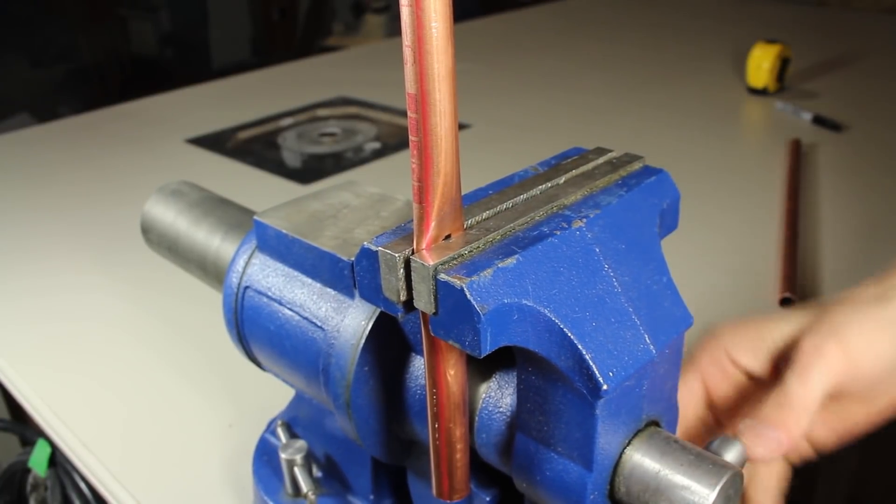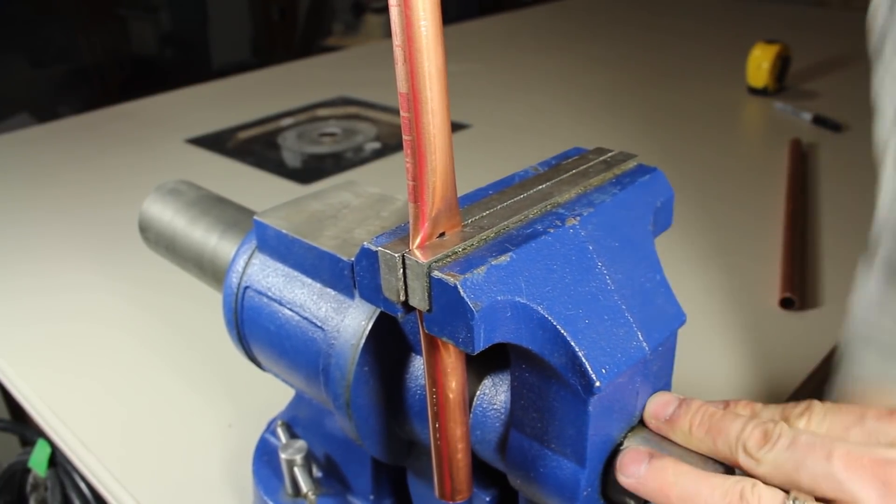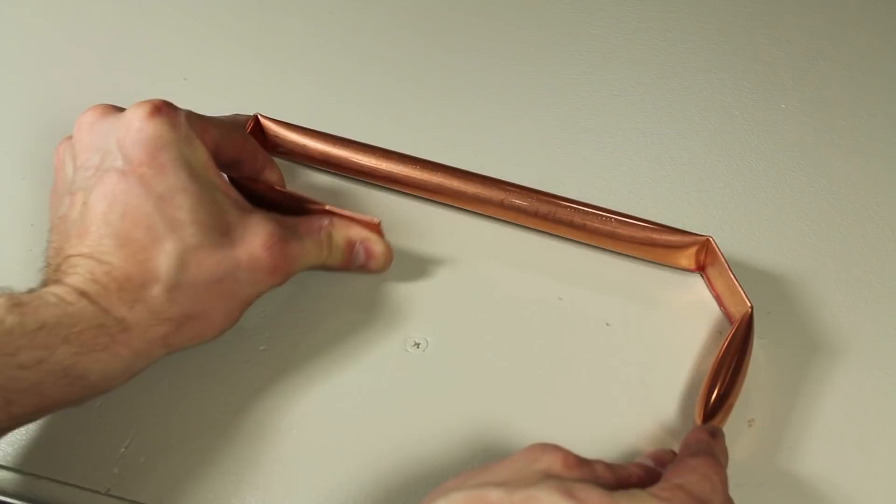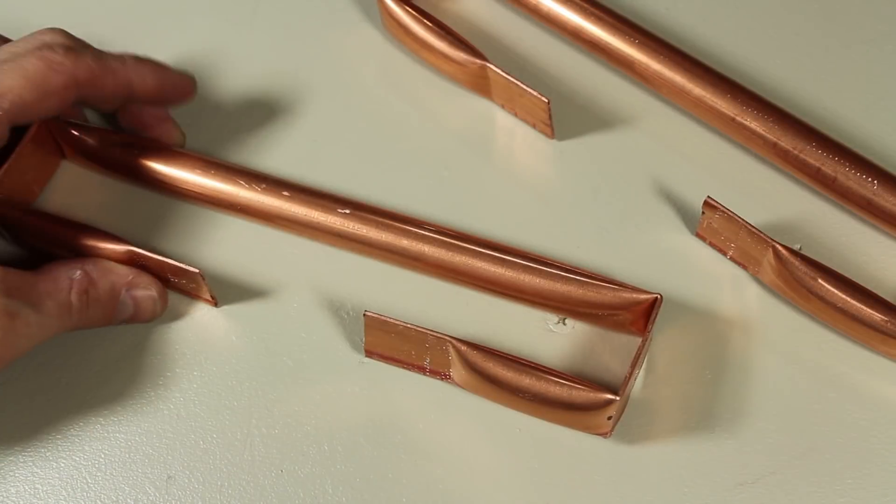Now we can use a hammer or bench vise to compress the copper, allowing us to bend it over easily. When all the markings have been compressed, including the tips, the electrode can be formed into a rectangle, and should look like this.